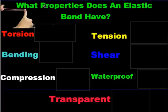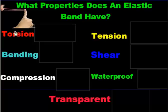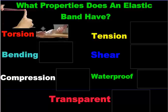Let's look at what properties an elastic band has. You need to memorize these properties and be very comfortable using these words. Does an elastic band have torsion? Can you twist an elastic band? Yes, you can. You can twist an elastic band, so it's got some torsion. How about bending? Can you bend an elastic band? Definitely you can.